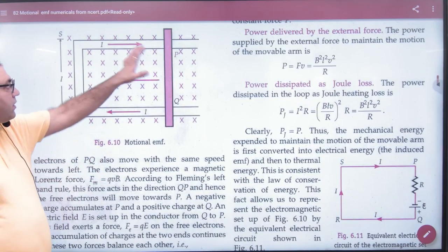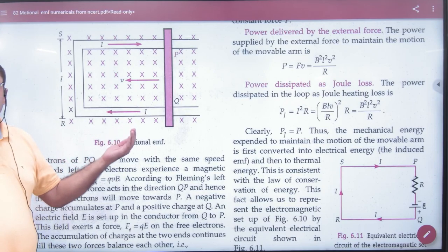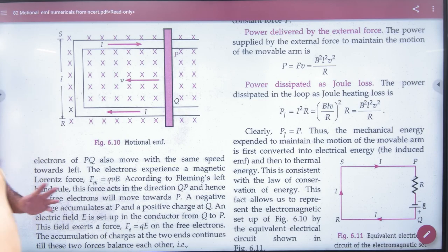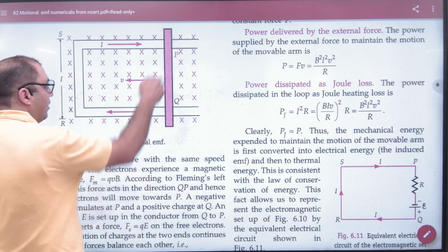Suppose that there is a rod. Where is the rod moving? The left is moving. Then the motional EMF will be developed in BLV. And how will it develop? We discussed that the current will come from Fleming's rule.